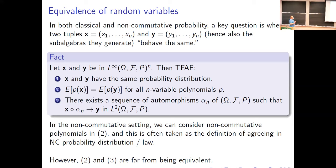In the non-commutative setting, there has been a lot of work using non-commutative moments — replacing the expectation of P(X) equals expectation of P(Y) with non-commutative polynomials, or star-polynomials, in tuples X and Y. We often use this as a definition of agreeing in non-commutative law or non-commutative distribution. But in a non-commutative setting, the equivalence between having the same distribution and being approximately conjugate by automorphisms fails quite drastically.